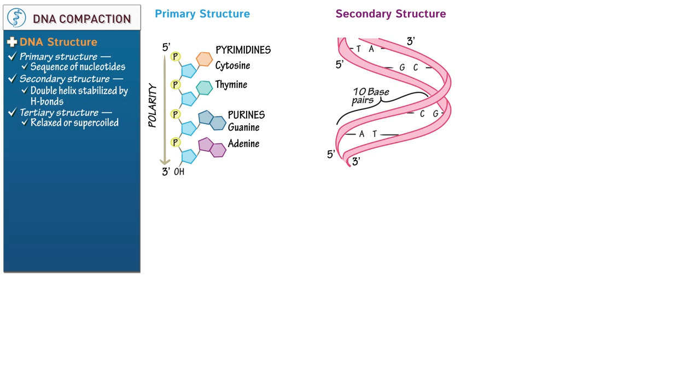Because of purine-pyrimidine base pairing, DNA contains an equal amount of purines and pyrimidines. Finally, let's draw a single line for each hydrogen bond that forms between each purine-pyrimidine pair. Show that thymine and adenine form two hydrogen bonds. Show that guanine and cytosine form three hydrogen bonds. These hydrogen bonds maintain DNA's secondary structure.